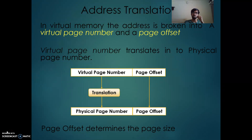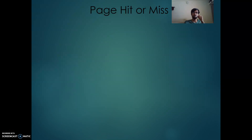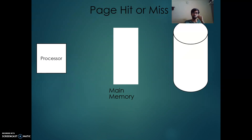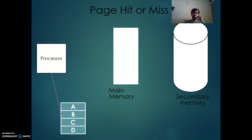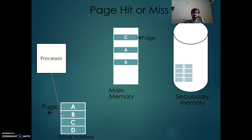This is called address translation. The virtual page number is present in the PC, and the physical page number is present in the main memory. Suppose the PC wants a certain page — it needs to access it from main memory. If it is there in the main memory, it is a page hit.